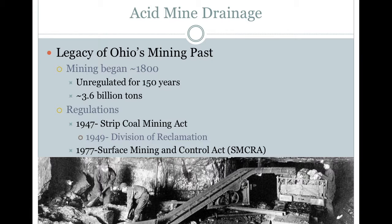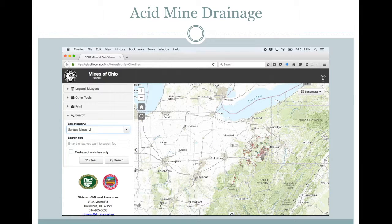In 1977, the federal government passed the Surface Mining Control Act. This act not only put a tax on coal to reclaim new mines, but also increased taxes on coal being mined to reclaim damage from pre-regulation. The Division of Natural Resources has created an interactive map with most of the known mines in Ohio marked. As you can see, the vast majority of mining in the state occurs in the southeastern-most part.